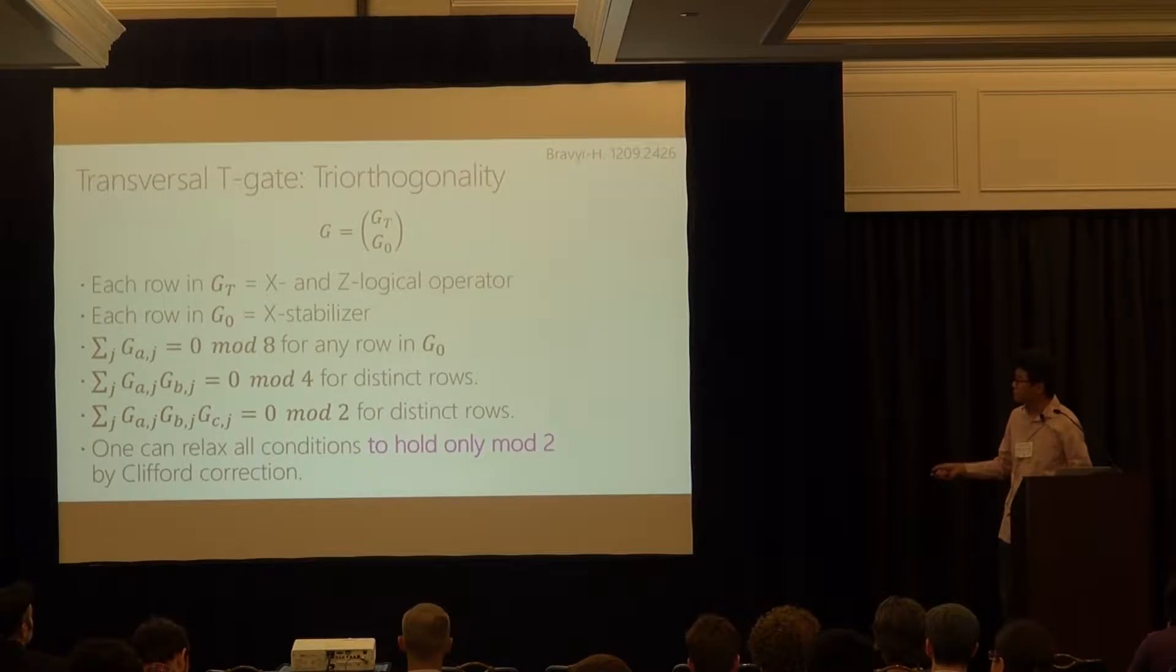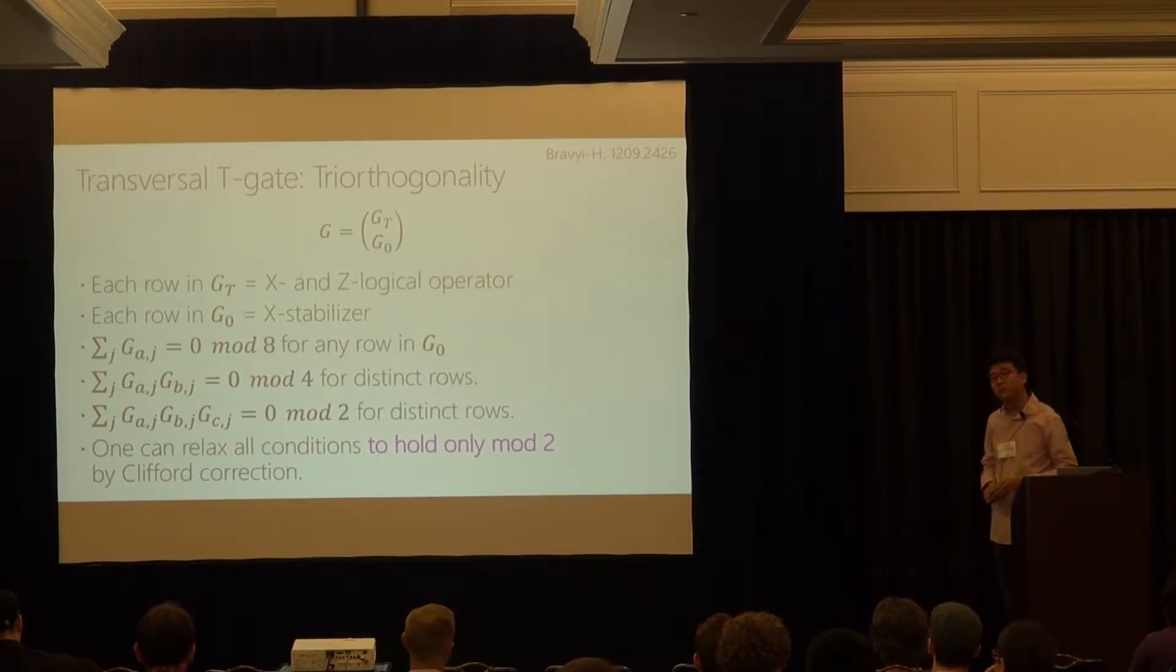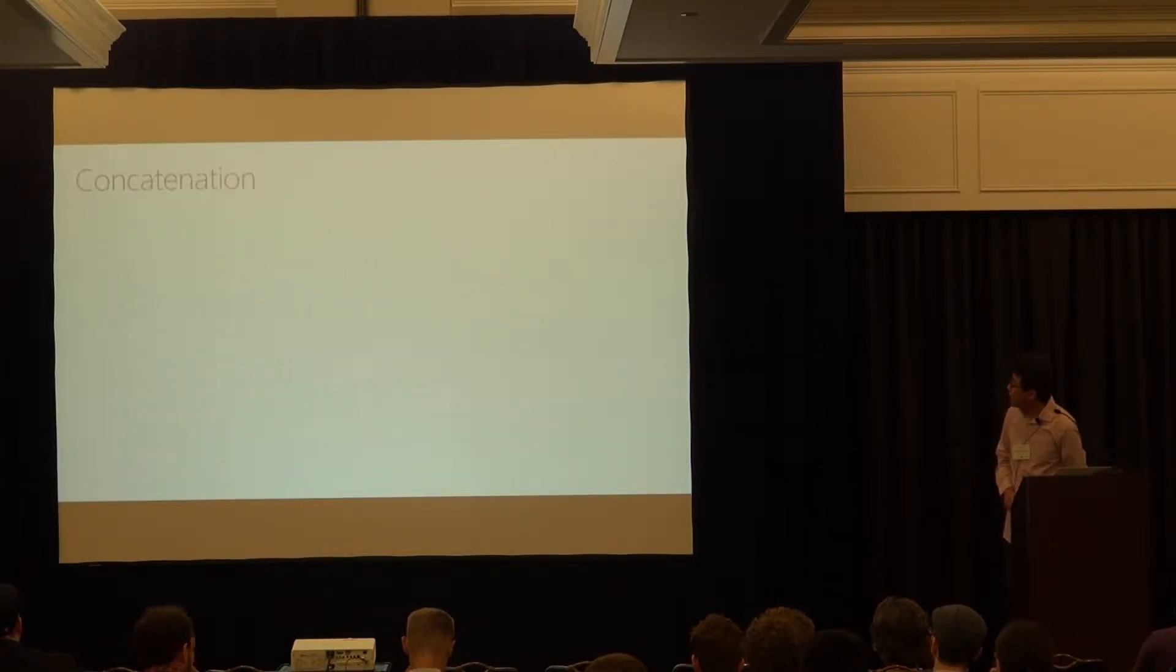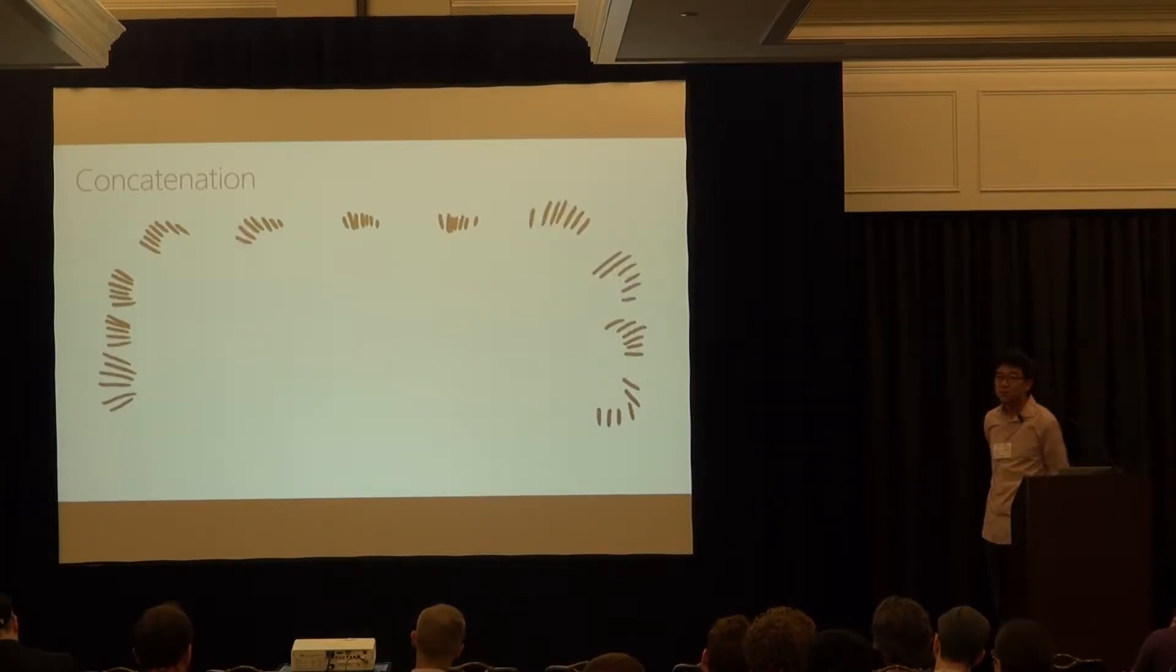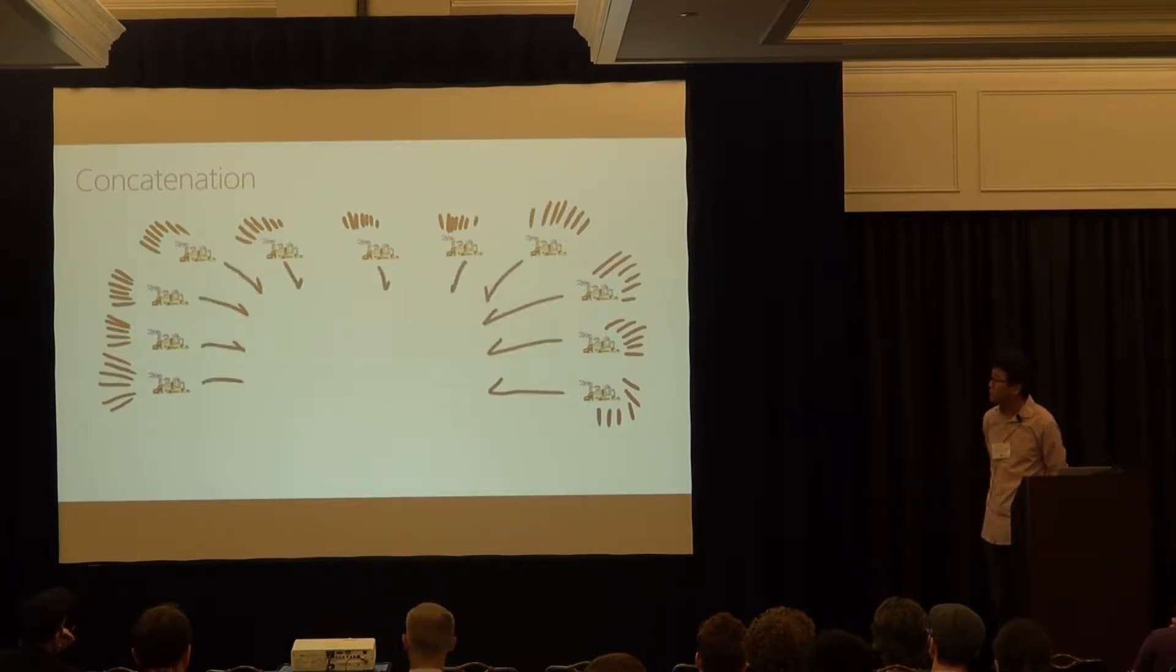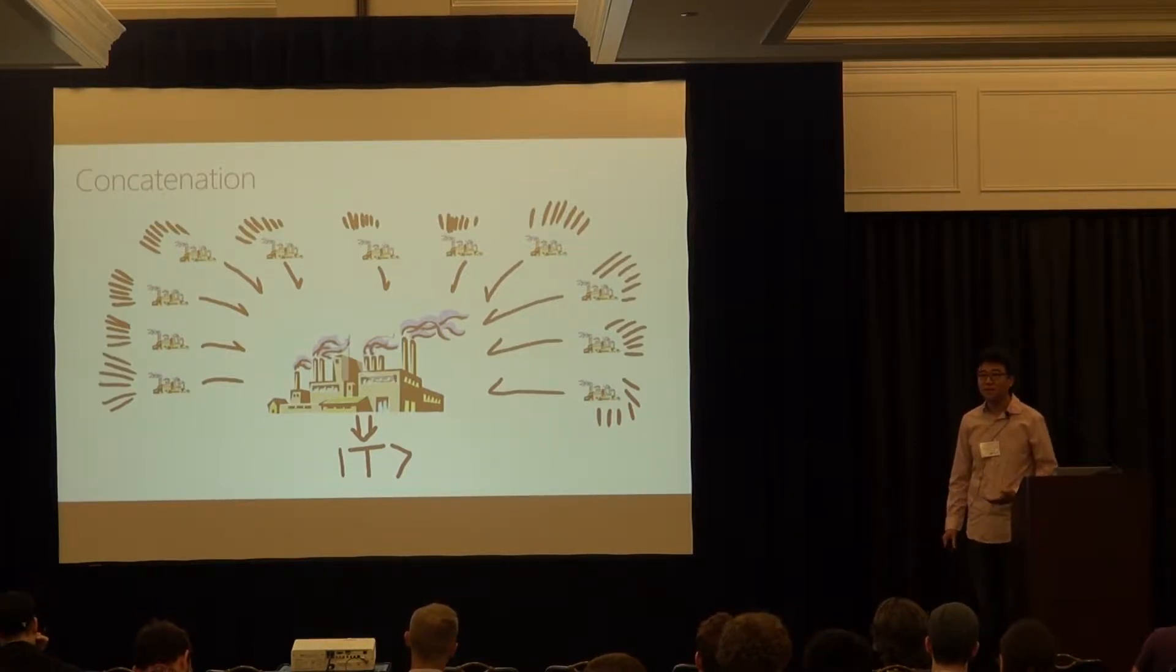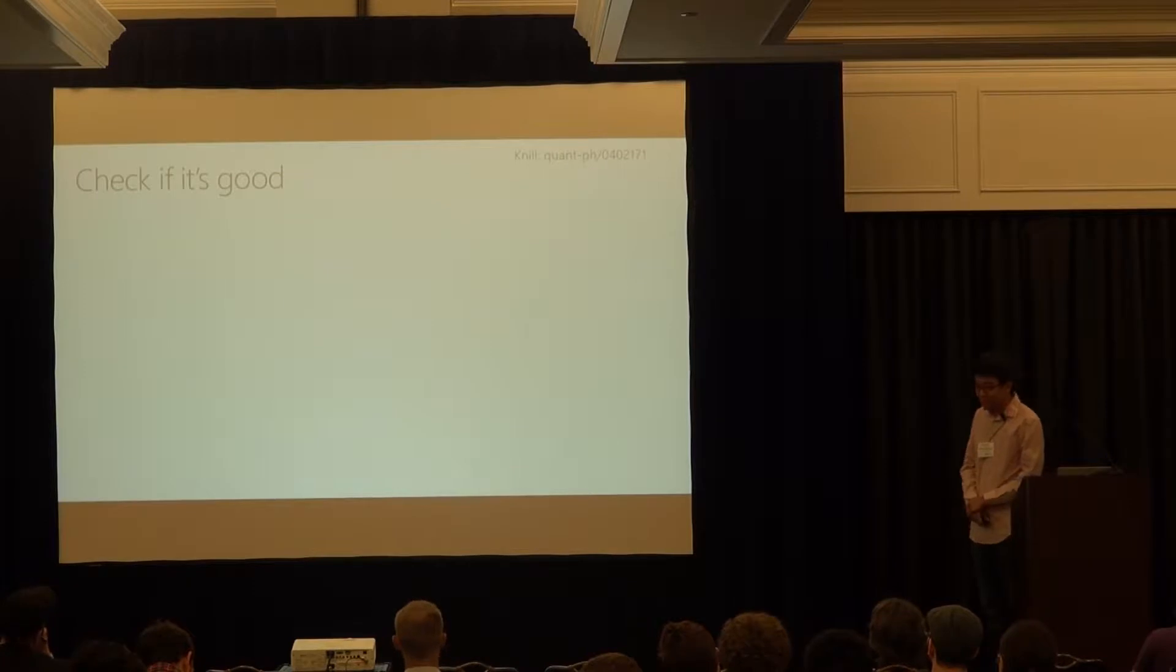And in fact, you can relax all these conditions just to hold modular two, not modular eight or four. The price you have to pay is in this relaxed condition is that you have to apply certain Clifford correction after your transversal T. But since in the distillation protocol, it is easier. Well, it is often discussed not caring about the Clifford cost. So this is going to be a valid distillation protocol. And that is called triorthogonality and given such a triorthogonal code, what you do typically do is you just concatenate, you prepare several bad states and then you run your factory once and then produce one state out of each and then you collect them and you put into a bigger machine and you produce one T out.